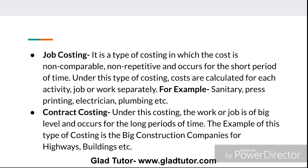Under this type of costing, costs are calculated for each activity, job, and work separately. For example, if a sanitary worker, electrician, or plumber comes to your house, they come for a small job, complete it, and leave. So plumbers, sanitary workers, press printing — these come under job costing.